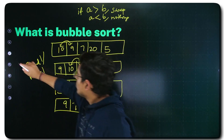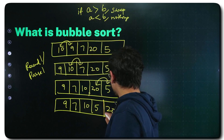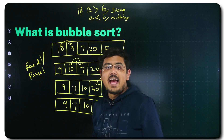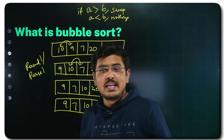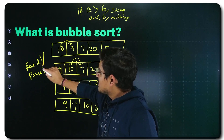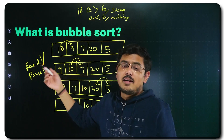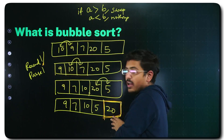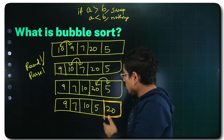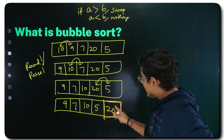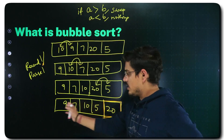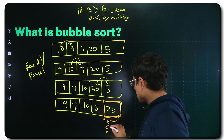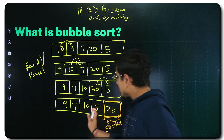When you swap them, the first round or first parse ends. After this parse, the largest value is placed at the end of the array. Round one gives you the maximum value — 20 — at the end. You consider this portion as the sorted portion.